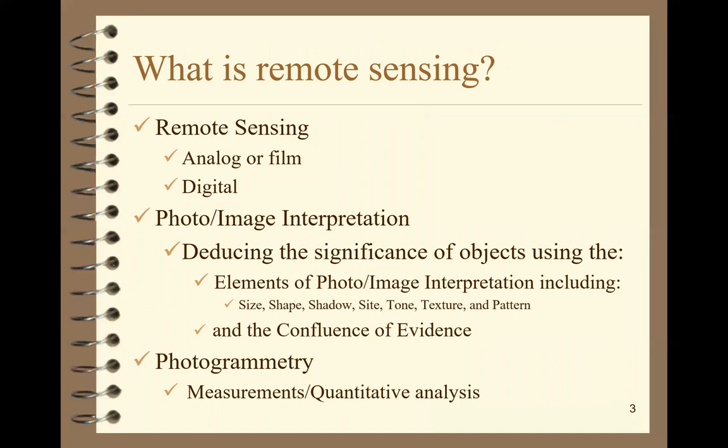In the past, we did remote sensing from the early days — from the 1860s or so — using film. Photographs were done on film, and we call that analog remote sensing. Over the last 20 years or so, we've really switched into the digital world. You've got a digital camera on your cell phone and computers that work in the digital world. There are two components to remote sensing: photo or image interpretation, and measurements.